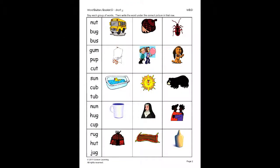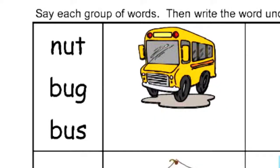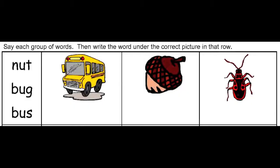On this activity, the student will say each group of words, then write the word under the correct picture in that row. Here, the student would read aloud the first group of three words: nut, bug, and bus. For each word, the student will find the matching pictures in that row. Once he finds that correct picture, he should then write the matching word underneath the picture, then cross out the used word.